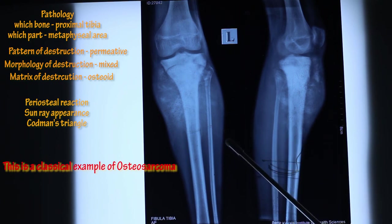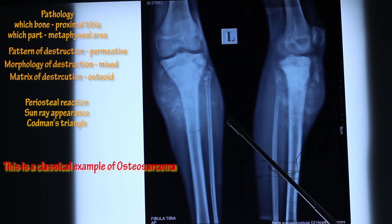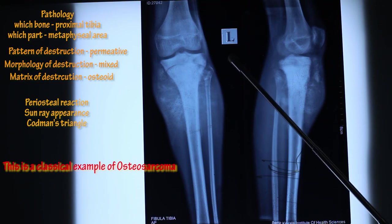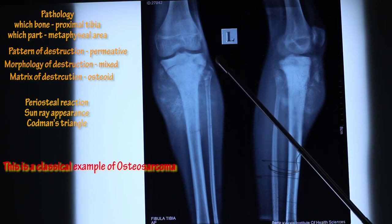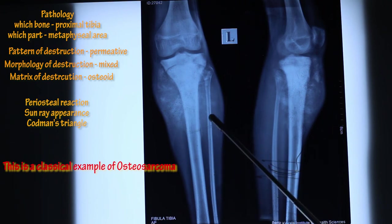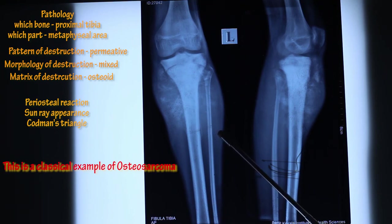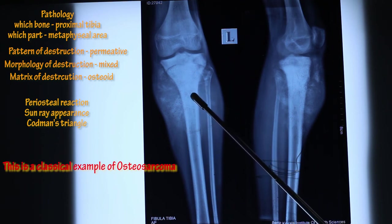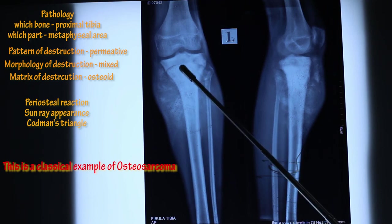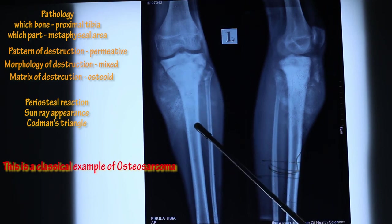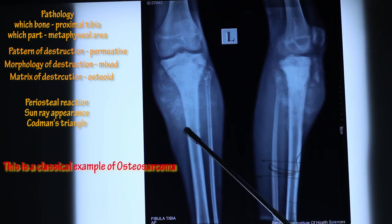So this is a classical example of osteosarcoma. This is how we read the X-ray. To summarize: these are plain X-rays of the knee joint showing the distal femur and whole tibia, anteroposterior and lateral views, of a skeletally immature person, showing a permeative osteoblastic lesion in the metaphysis of the tibia with sunray type periosteal reaction and Codman's triangle — most probably osteosarcoma of the proximal tibia.